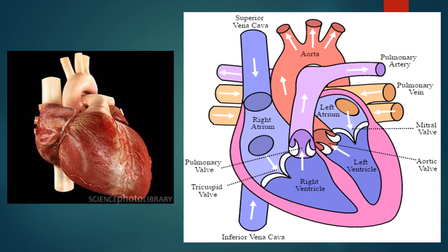All of the muscle tissues of the heart do not contract at the same time. Different parts of the heart contract at different times. When the top portion contracts, the bottom part relaxes. When the bottom contracts, the top relaxes.